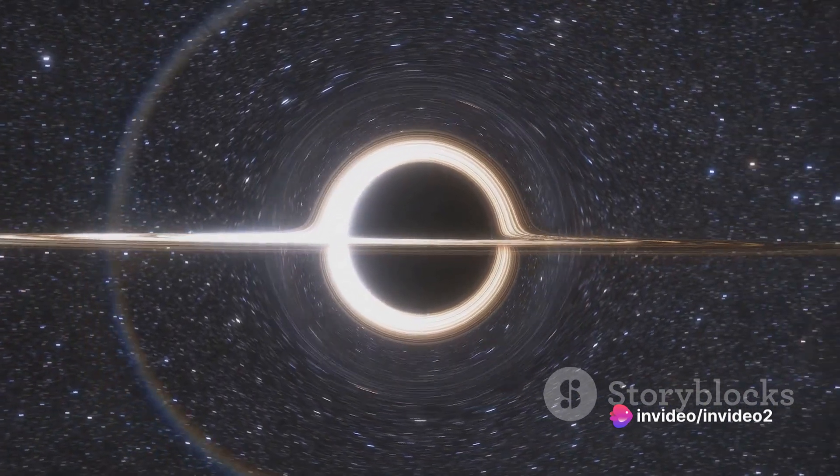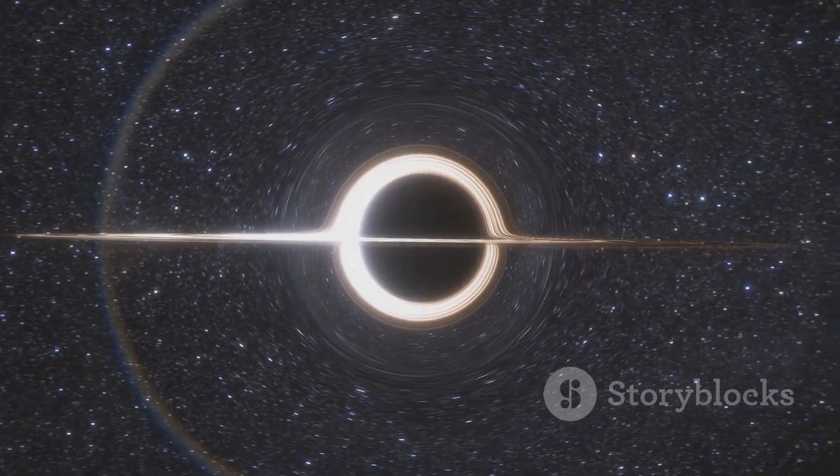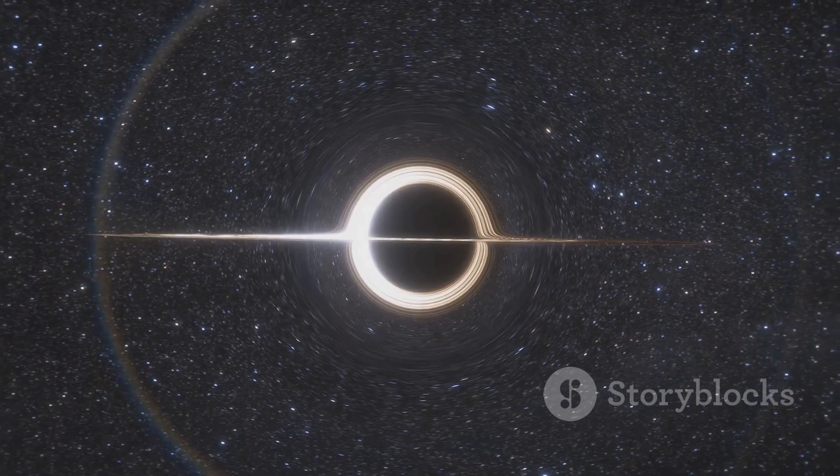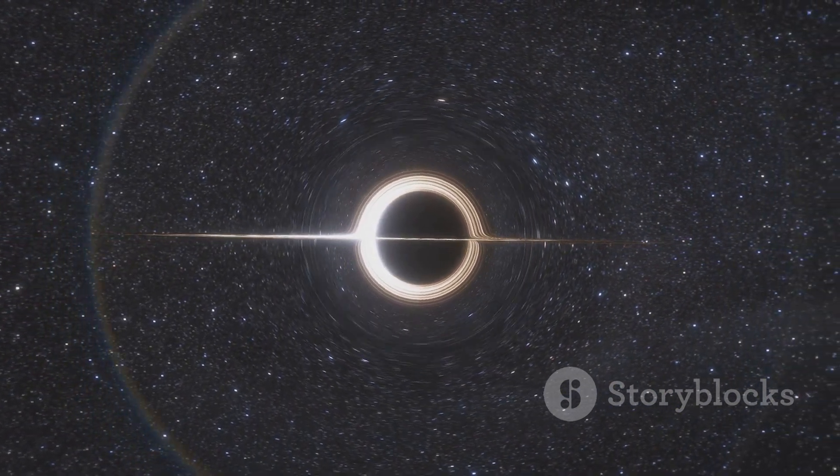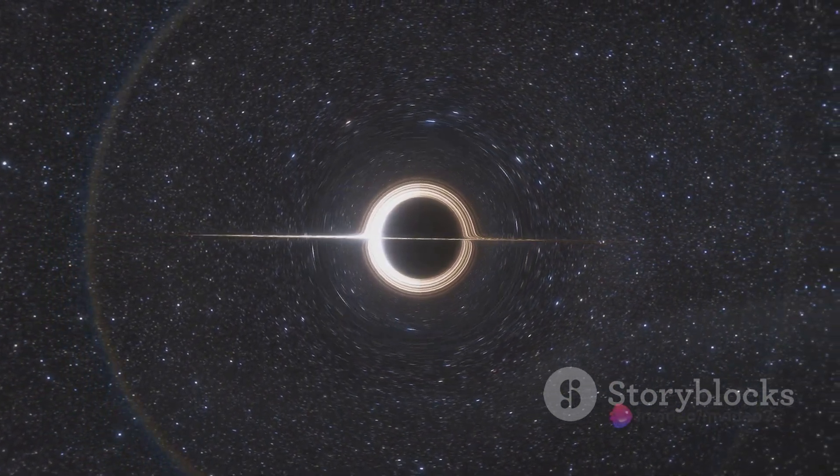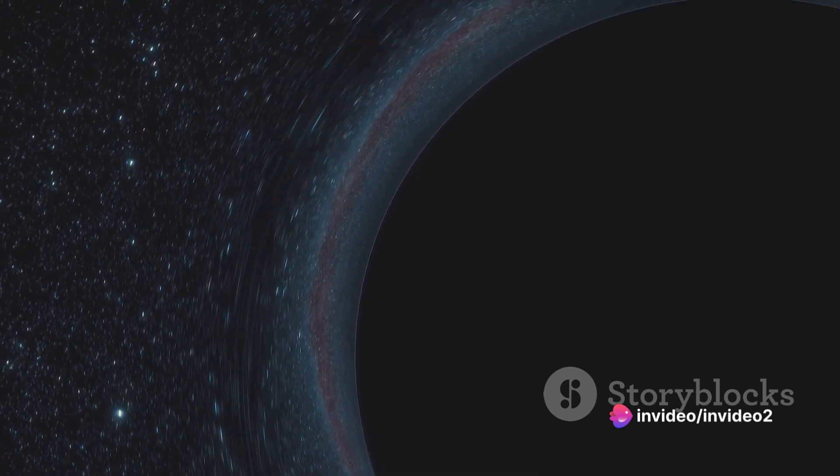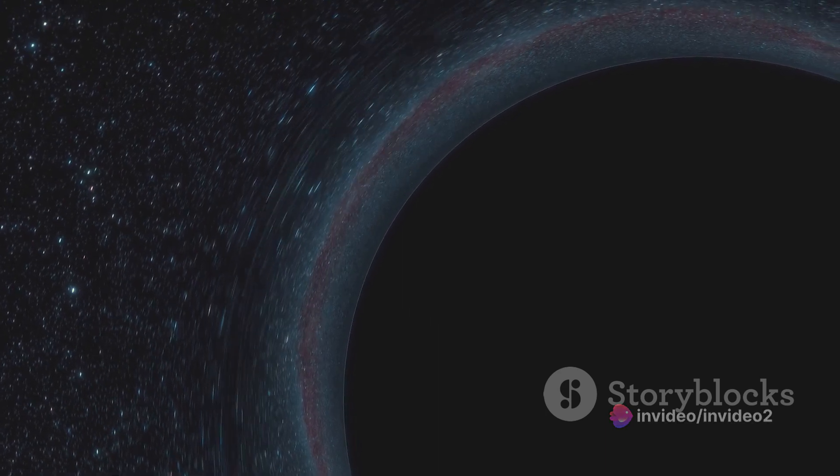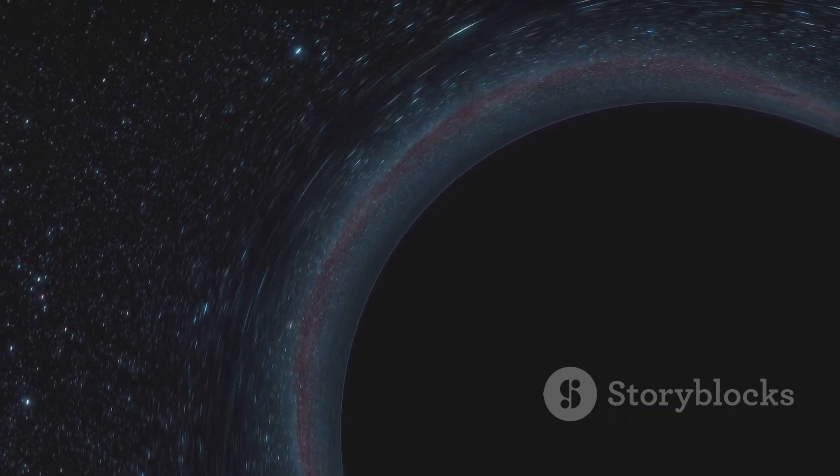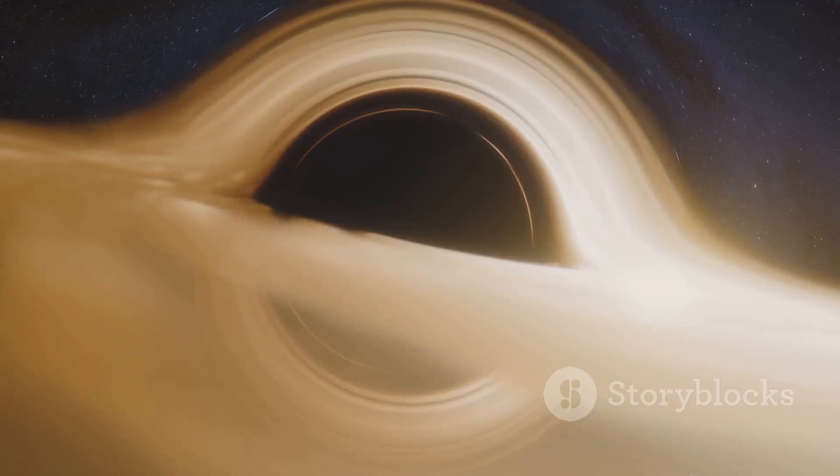But here's where things get really weird. As you approach a black hole, time and space start to behave differently. This is due to the extreme gravity of a black hole which causes time to slow down near its event horizon. This phenomenon, known as time dilation, means that time passes slower for an object falling into a black hole than it does for an observer far away.